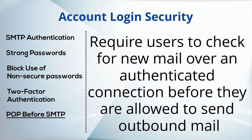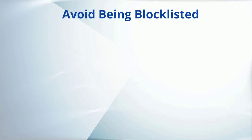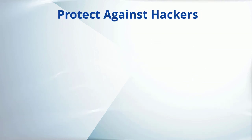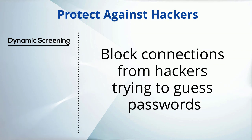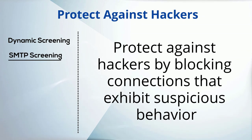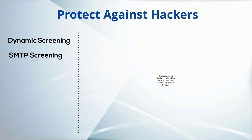Use POP before SMTP to require users to first check for new mail before they are allowed to send outbound mail. To avoid being placed on a block list, make sure that your software does not allow open relaying, which occurs when email that is neither to nor from a local account is delivered through your system. To protect against hackers trying to abuse your system, use dynamic screening to track and block invalid login attempts, and SMTP screening to block connections that exhibit suspicious behavior.